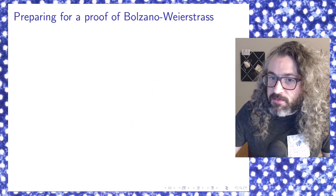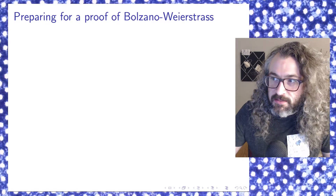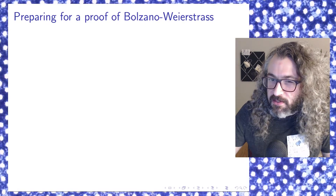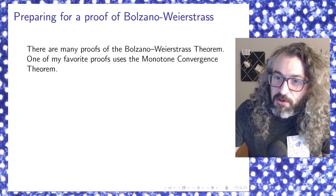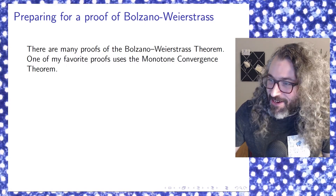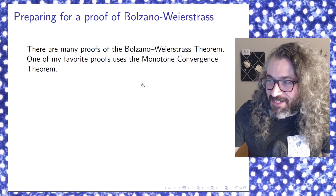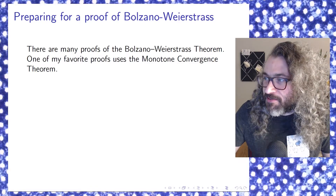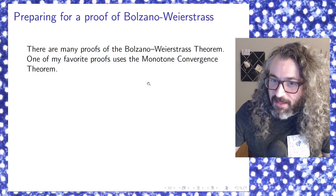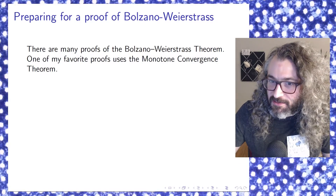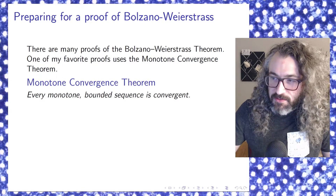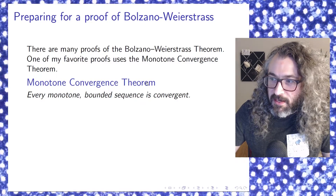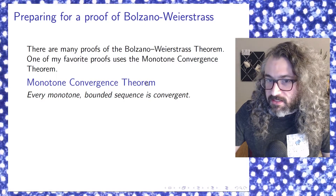Now moving on to the proof of the Bolzano-Weierstrass theorem. It takes a little bit of prep work — I should mention there are many different proofs of the Bolzano-Weierstrass theorem, and I'm just going to show one of my favorites. It's going to use something called the monotone convergence theorem, and I'm assuming you've already run into that if you're studying real analysis, since you usually see it pretty early on. The monotone convergence theorem says every monotone bounded sequence is convergent.